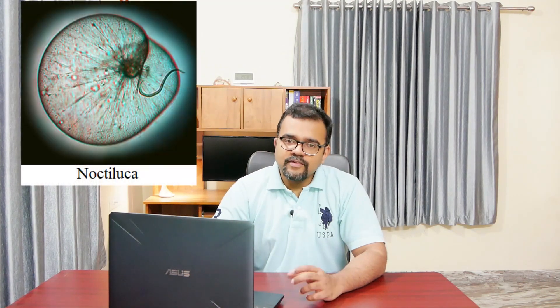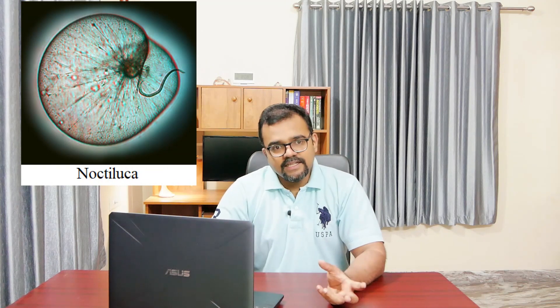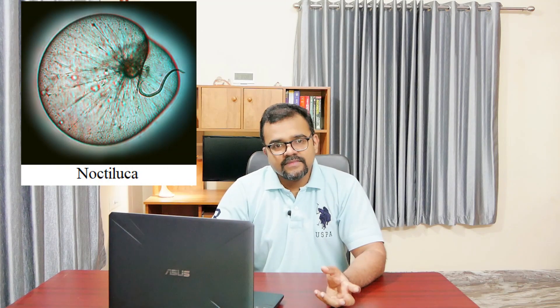Now we will discuss Noctiluca in detail. Noctiluca is commonly known as the sea sparkle. They occur in swarms of millions and these organisms can cause glowing of the sea. This gives Noctiluca, more specifically the most common species, Noctiluca scintillans, the popular name the sea ghost or the fire of the sea.